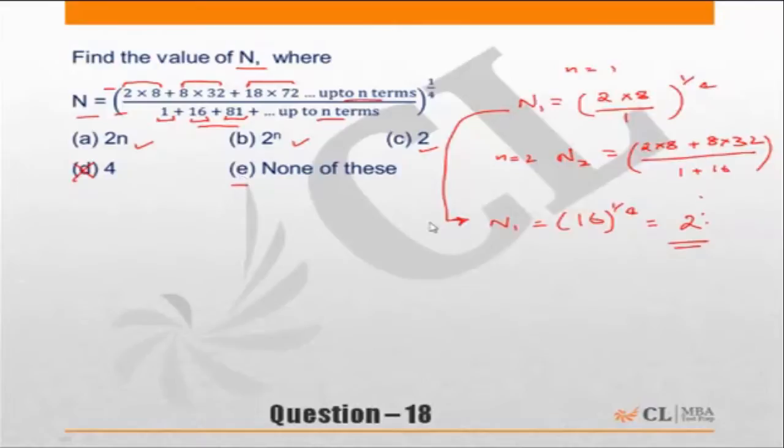And let us now look at N₂. Now N₂ is nothing but - okay, we also had a 1/4 out here. N₂ is equal to 2 into 8 plus 8 into 32, so let's take 8 as common. We will be left with 2 plus 32 raised to power 1/4.